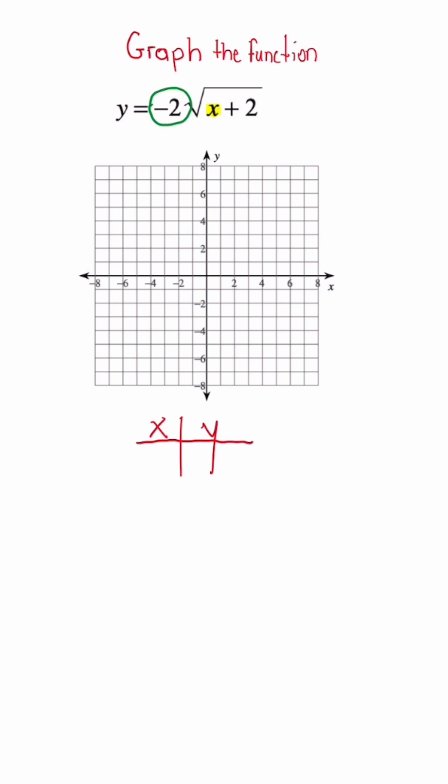So the first X that I plug in here is negative 2, because once we plug it in, we're going to get 0 for the Y. So our first ordered pair is going to be negative 2, 0.